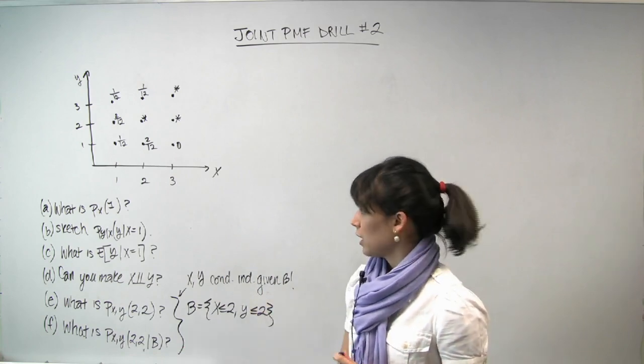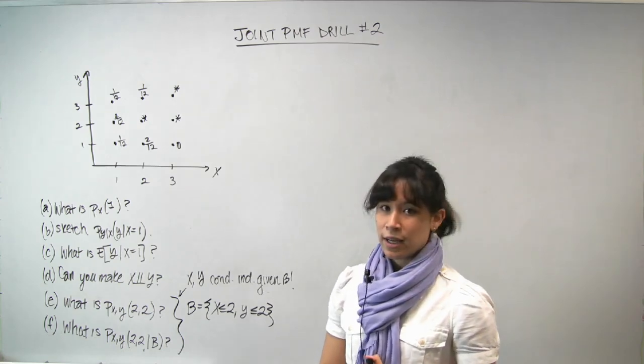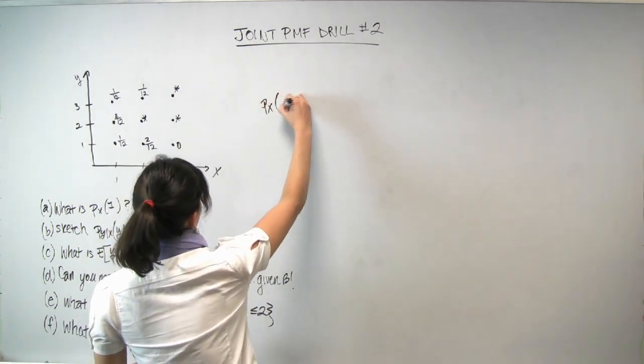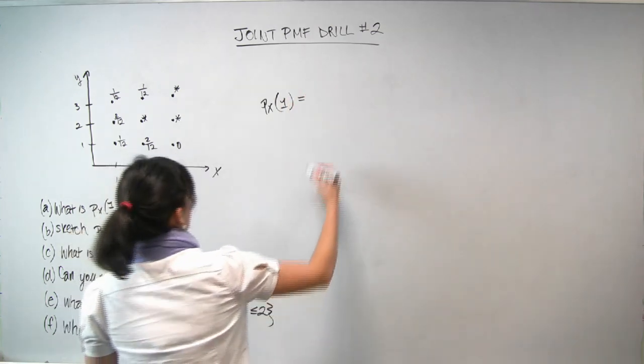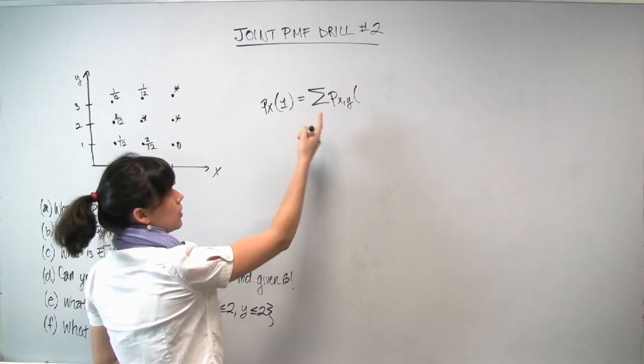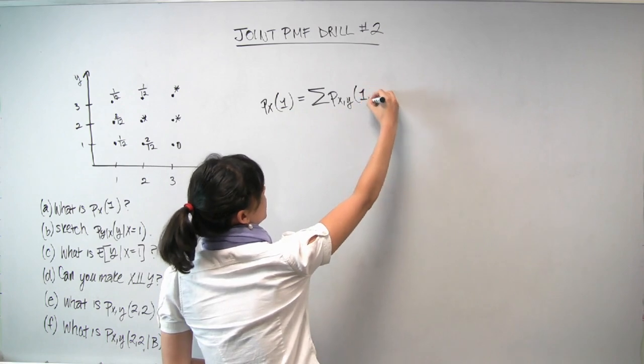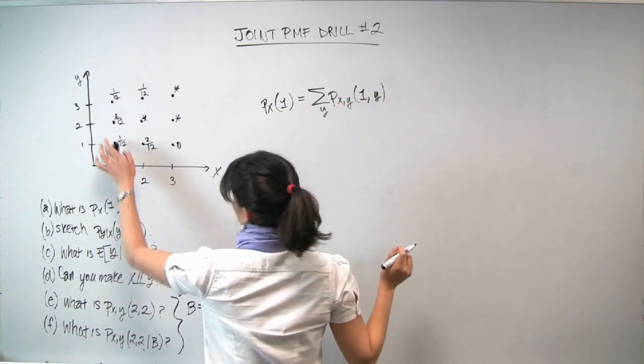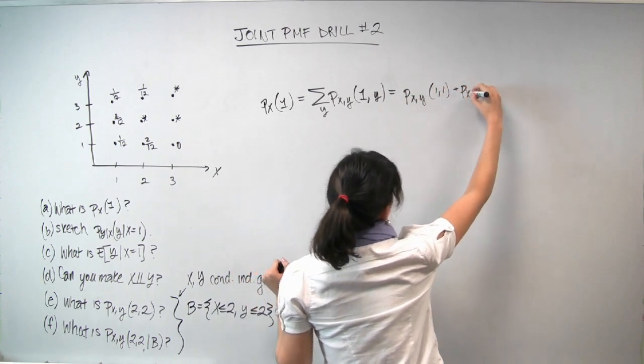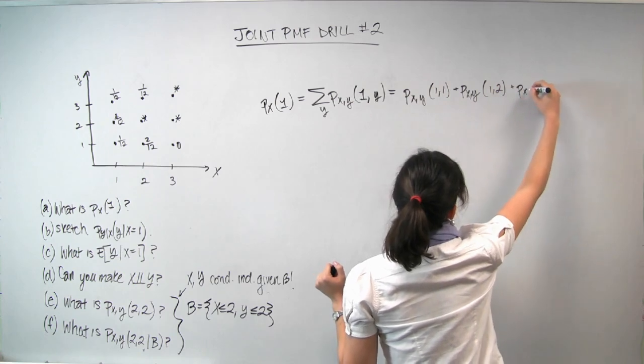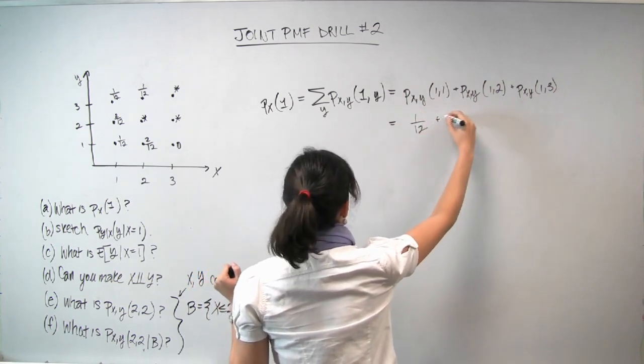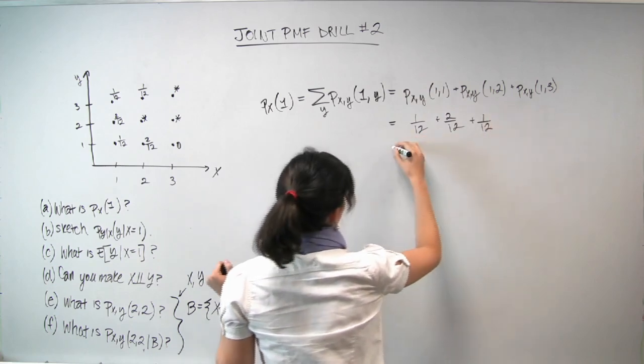So we start off pretty simply. We want to compute in part A the probability that X takes on a value of 1. So for those of you who like formulas, I'm going to use the formula which is usually referred to as marginalization. So the marginal over X is given by summing over the joint. So here we are interested in the probability that X is 1 so I'm just going to freeze the value of 1 here. And we sum over Y and in particular 1, 2, and 3. So carrying this out, this is PXY of 1,1 plus PXY of 1,2 plus PXY 1,3. And this of course reading from the graph is 1 twelfth plus 2 twelfths plus 1 twelfth which is equal to 4 twelfths or 1 third.